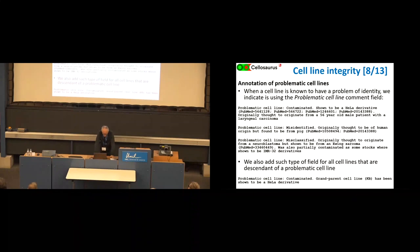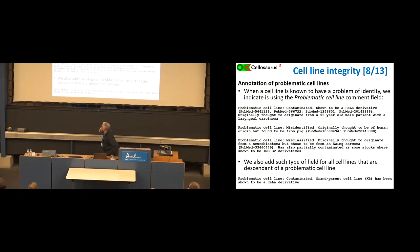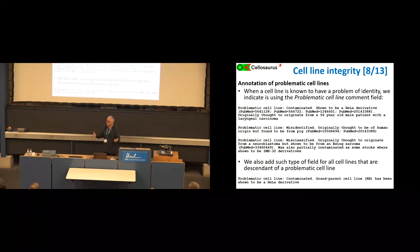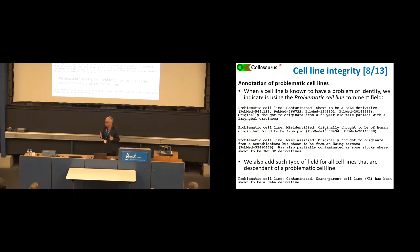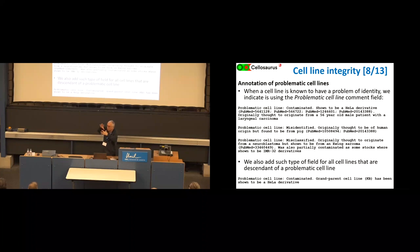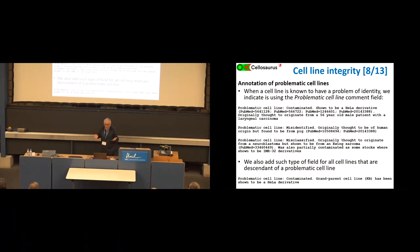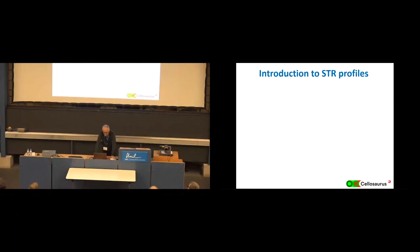We also flag cell lines that are descendants of a contaminated cell line, because sometimes that's a hidden problem. People know a cell line is contaminated, but some researchers created new cell lines from it before the contamination was known. So you have a whole family or hierarchy of cell lines that are wrong because they all descend from one that is not correct.